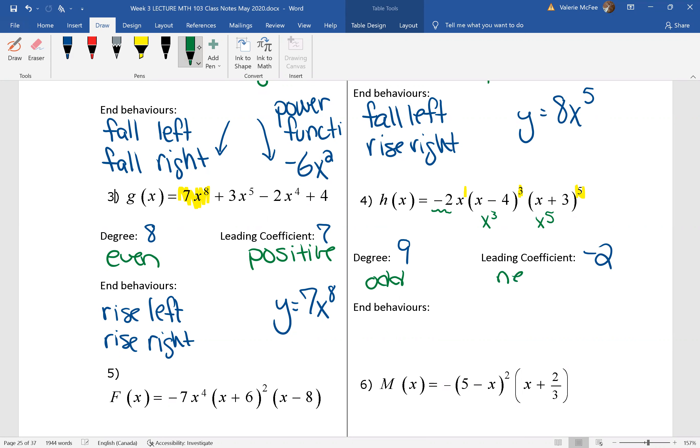When we have a function of odd degree with a negative leading coefficient, we think about the graph of y = -x³, which is rising on the left and falling on the right. This one is going to behave like that power function of y = -2x⁹.